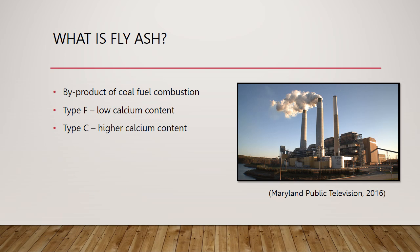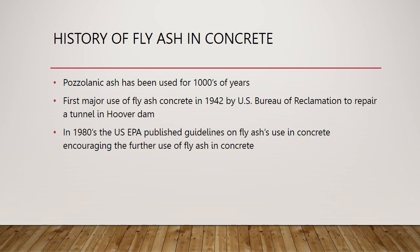Fly ash is a product collected from the burning of coal and is made of silica, aluminum, iron, and calcium. There are two types of fly ash that exist: type F and type C. Type F is a fly ash with low calcium that has carbon contents around 5%. Type C is a fly ash with higher calcium contents and carbon contents less than 2%.